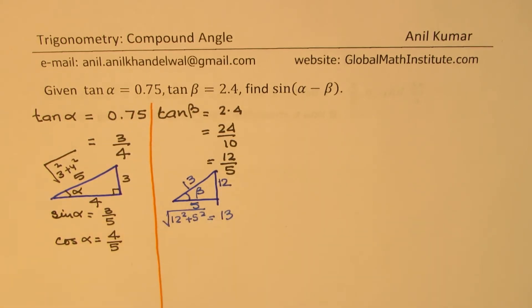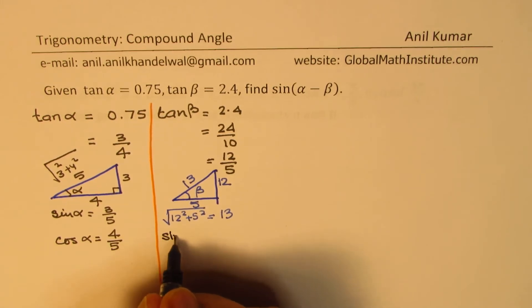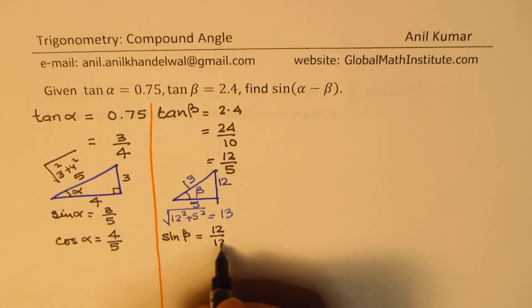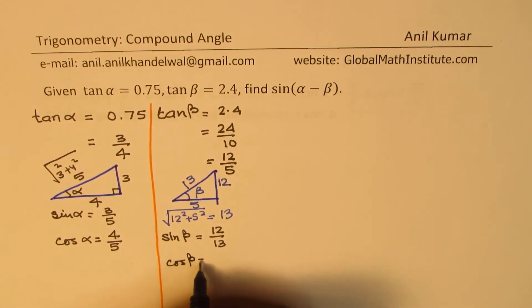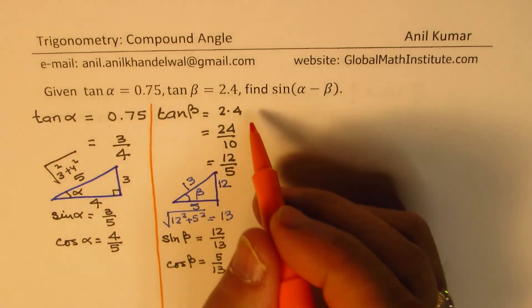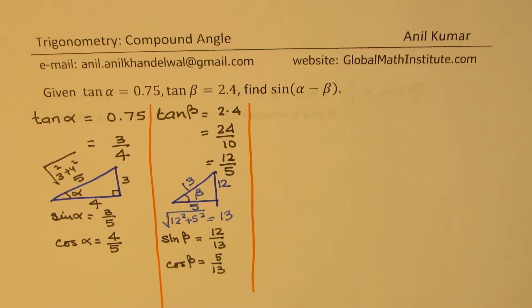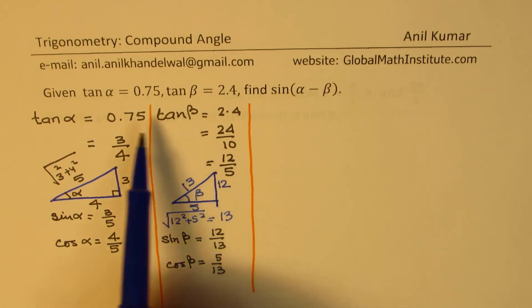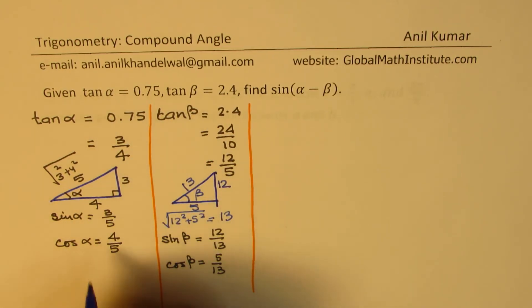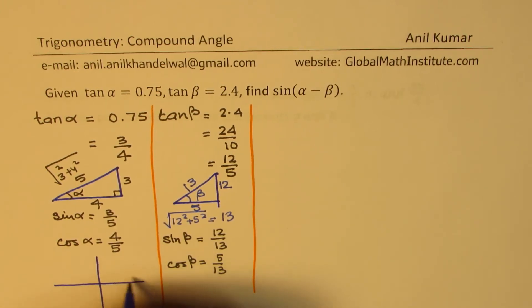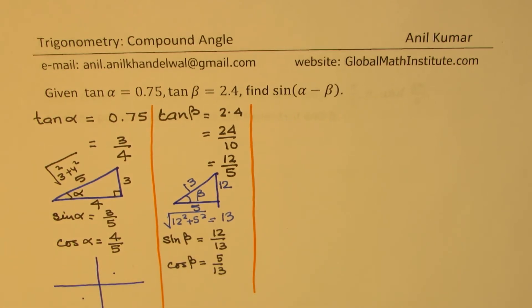Now we know the three sides of our triangle, so we can write what sin β and cos β are. sin β is 12 over 13, and cos β is 5 over 13. Now it is absolutely clear how to get sin(α - β). There is one part to consider: you should remember that when tan α and tan β are positive, they could be in quadrant 1 or in quadrant 3. That is kind of important to understand.